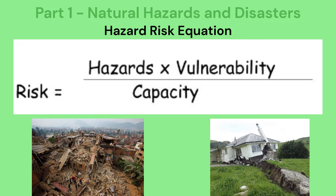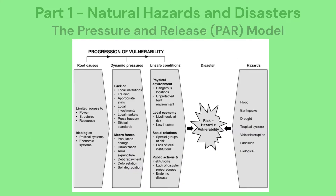For example, the Nepal earthquake of 2015 had a similar magnitude to the New Zealand earthquake of 2016. But 9,000 people died in the Nepal earthquake, compared to just two in New Zealand. We can recognize how, as a high-income country, New Zealand reduced the risk through its capacity to cope. To conclude this part of the video, we will look at the pressure and release model. It is another way to illustrate the link between vulnerability and disasters. You will notice how it is much more detailed than Degg's model, but uses the same theory.